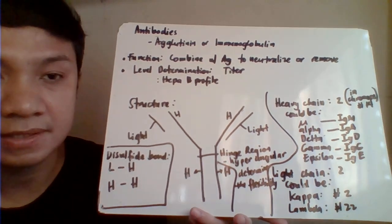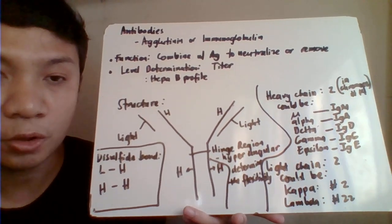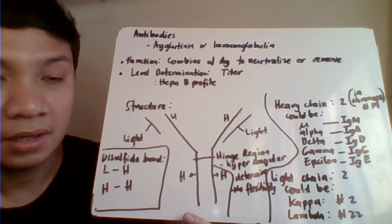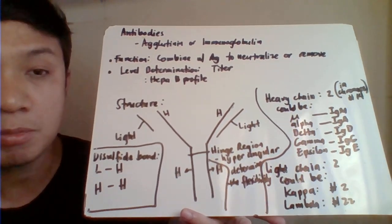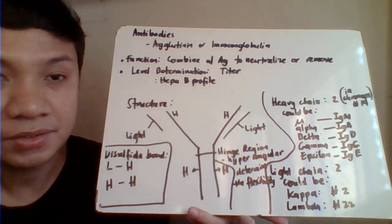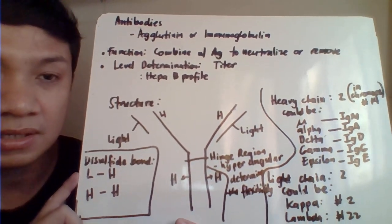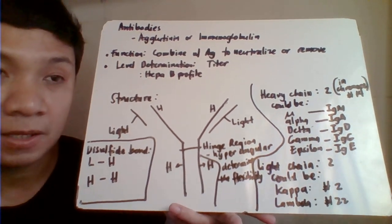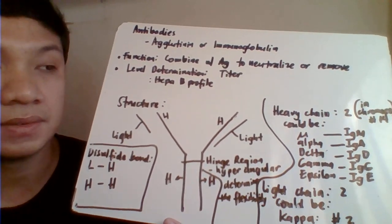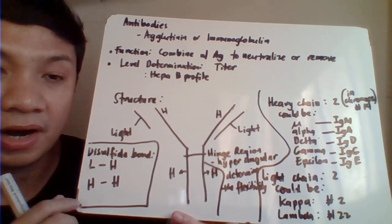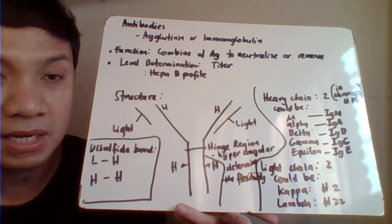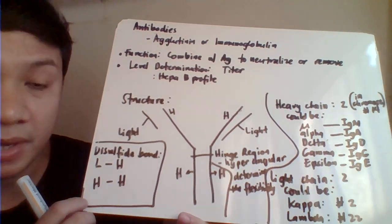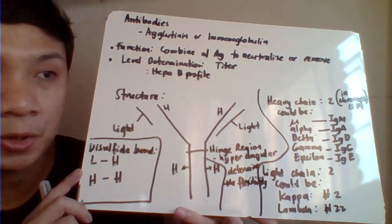Next we discuss antibodies, also called immunoglobulins or agglutinins. Antibodies are produced as a response to antigenic stimulation. We can determine the concentration of antibodies, called the antibody titer, such as in a hepatitis B profile to determine the stage of the disease process. The main function of the antibody is to eliminate, combine, and neutralize the antigen responsible for its production.